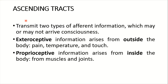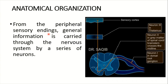The ascending tracts transmit two types of afferent information, which may or may not reach consciousness. These are exteroceptive and proprioceptive. Exteroceptive fibers carry information arising from outside the body — pain, temperature, and touch. Proprioceptive fibers carry information from inside the body, from muscles and joints. General information is carried through the nervous system by a series of neurons from the peripheral sensory endings.